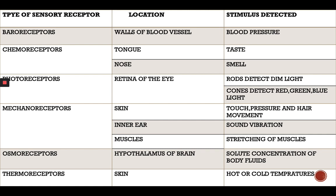We have types of sensory receptors, their location, and the stimulus detected. First, let's look at baroreceptors. They are located in the walls of the blood vessels. Each blood vessel has a certain pressure — arteries have the highest pressure, then veins and capillaries. Blood pressure is very important, and the baroreceptors in the walls of the blood vessels are responsible for detecting pressure.